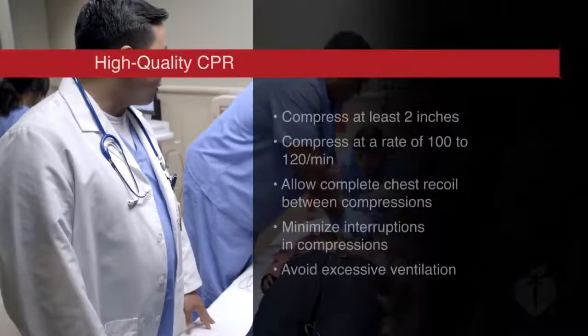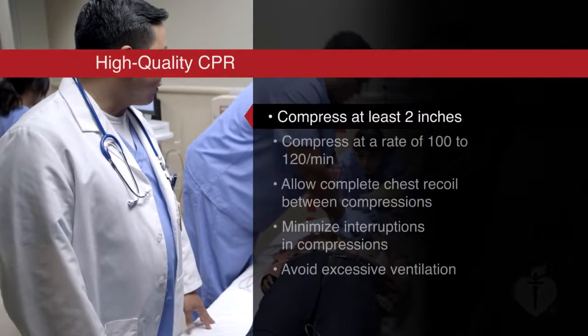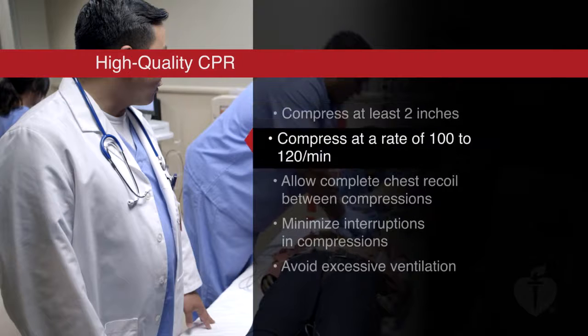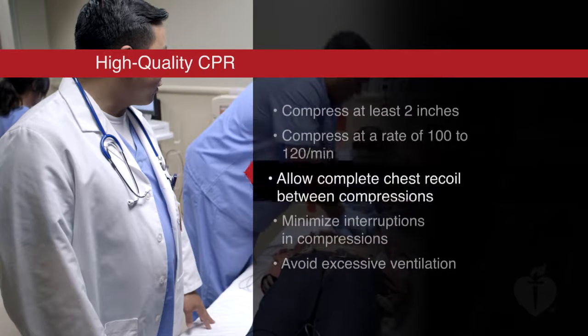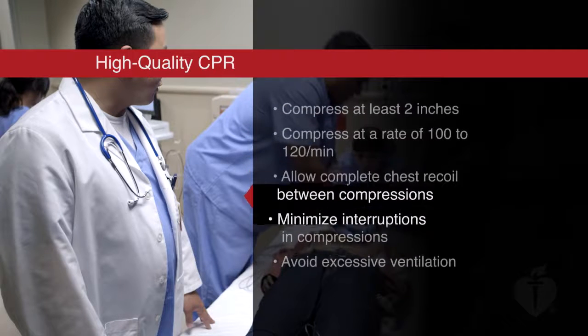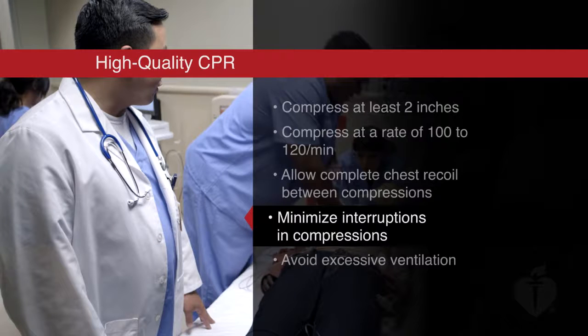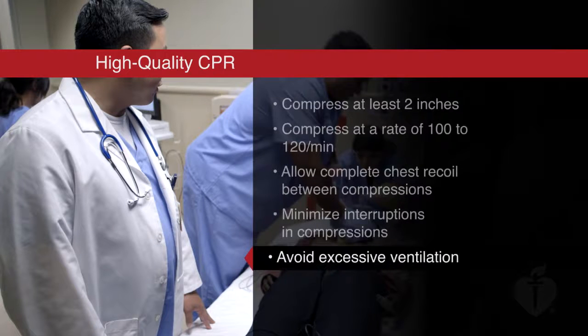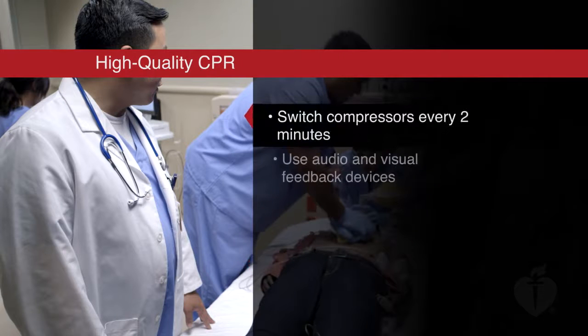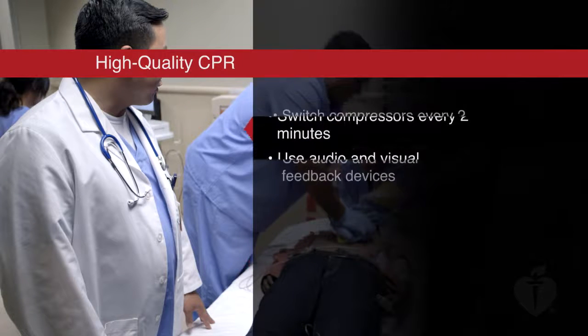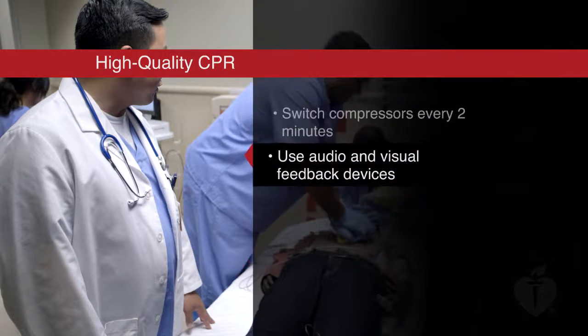In summary, perform high-quality CPR by compressing at a depth of at least 2 inches and at a rate of 100 to 120 per minute, allowing complete chest recoil, minimizing interruptions in compressions, and avoiding excessive ventilation. Additional measures such as switching compressors every two minutes, or earlier if fatigued, and using audio and visual feedback devices to improve CPR quality in real time, will help give patients the best chance for survival.